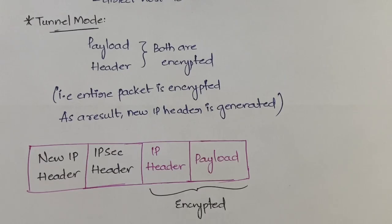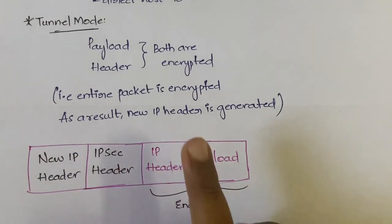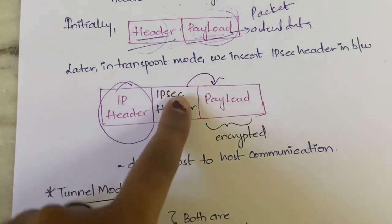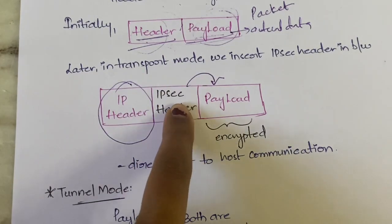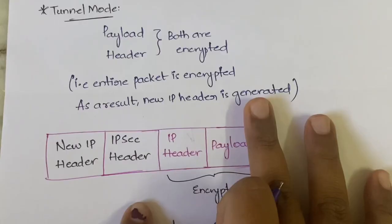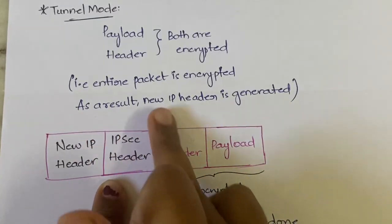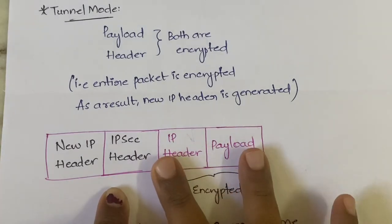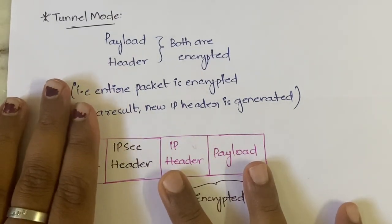Next is tunnel mode. In tunnel mode, both the payload and the header will be encrypted — the entire packet is encrypted. To encrypt both of them, you place the IP security header before the IP header. Because the IP security header is placed before the IP header, both the IP header and the payload are encrypted.